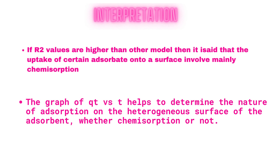Now the interpretation. If R-square values are higher than other models, then it is said that the uptake of a certain adsorbate onto a surface involves mainly chemisorption. If R-square value is lower than other models, then it can be said that chemisorption is not the primary mechanism. The graph of Qt versus T helps to determine the nature of adsorption onto the heterogeneous surface of the adsorbent, whether chemisorption or not.